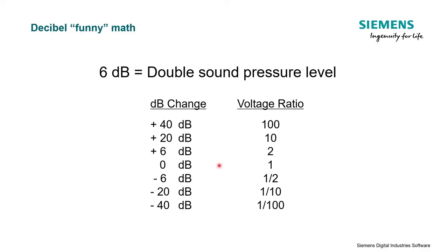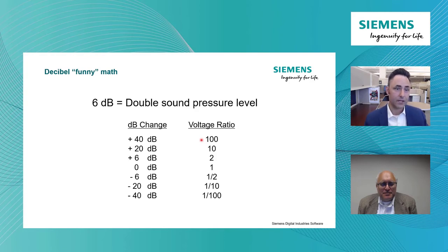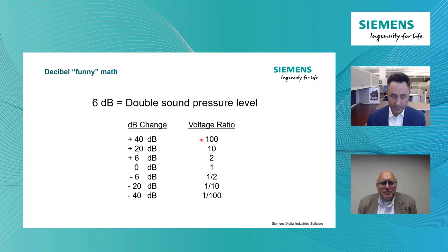To summarize these relationships: 6 dB is a factor of 2 in pressure. Drop 6 dB and you've cut sound pressure in half. 20 dB relates to a ratio of 10. 40 dB is a factor of 100. Big changes in the linear unit of pressure don't always equate to big changes in decibels. We use this to our advantage with the large dynamic range of human hearing, but we have to keep in mind that a doubling equals only a 6 dB change.